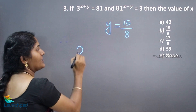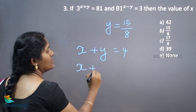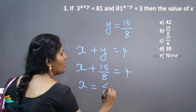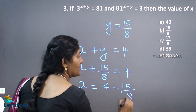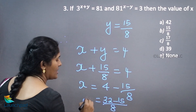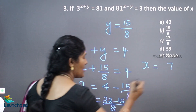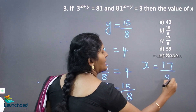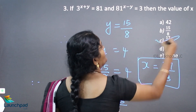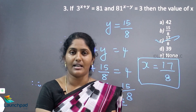Therefore, substituting into the first equation x plus y equals 4, with y equal to 15 by 8: x equals 4 minus 15 by 8, which is 32 by 8 minus 15 by 8, equals 17 by 8. So x value is 17 by 8. Your answer is option C. This is the example of how we can calculate the unknown value of x and y. Thank you for watching.